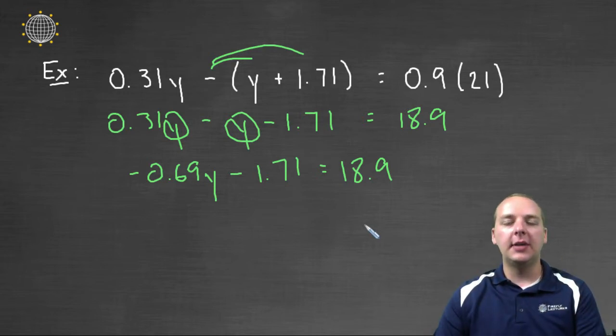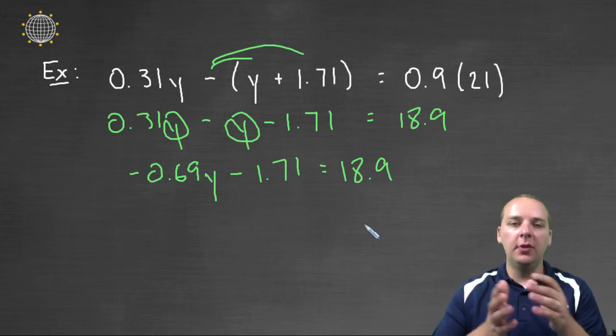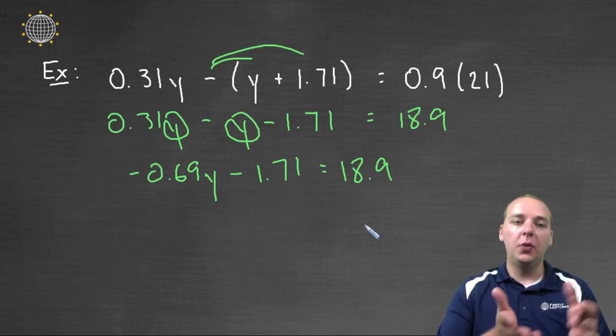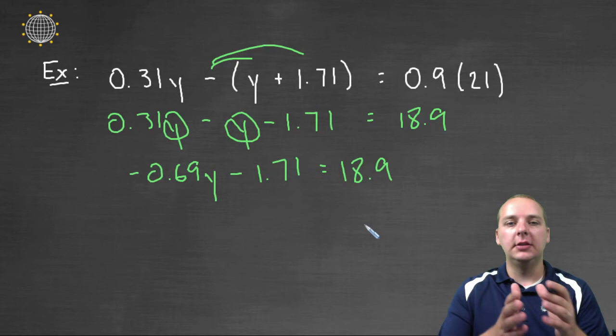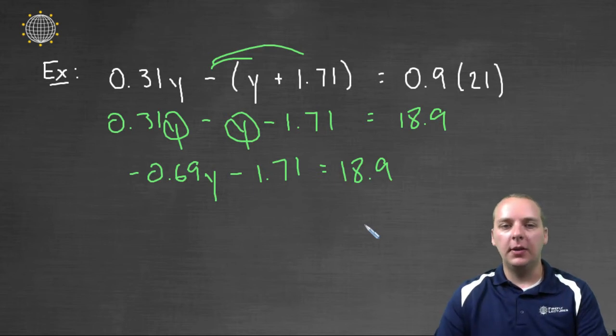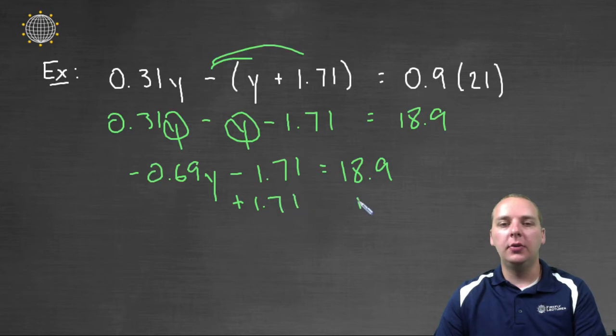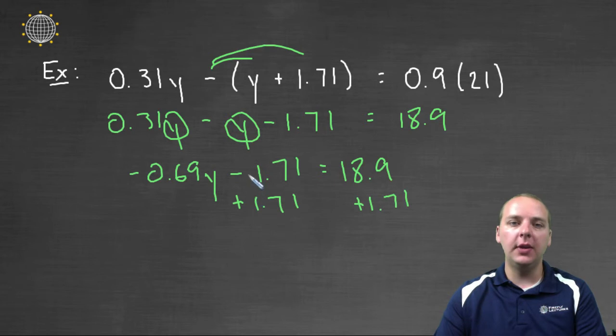Now as always, we'll move the variables to one side. The y's are already on the left, so we'll leave them there. We'll move the constants to the right hand side, the opposite side. We'll do that by adding 1.71 to both sides. And the reason again we do that is because it's the inverse, it's the opposite of subtracting 1.71, and so they will cancel on the left hand side.